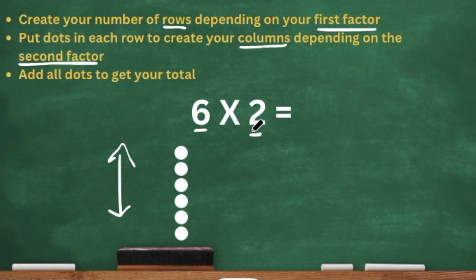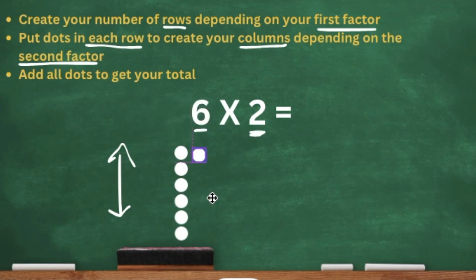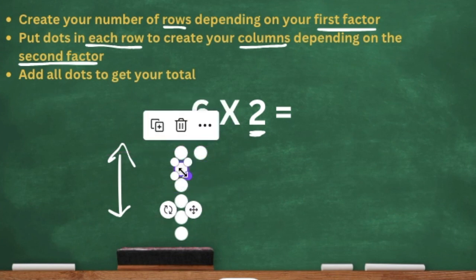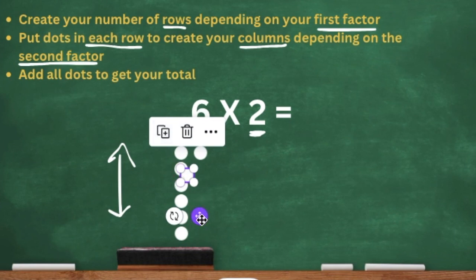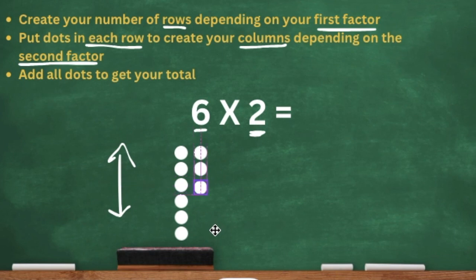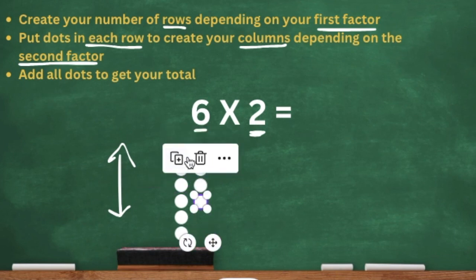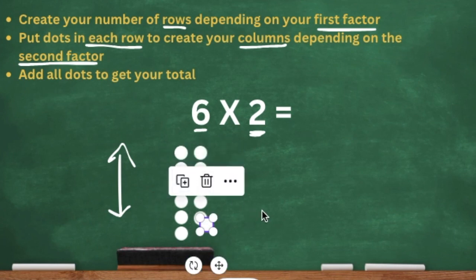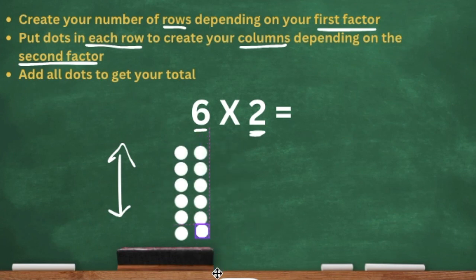I look at the second factor, which is two, and I'm going to put two dots in each row to create my columns. We already have one dot in each row, so we just add one more to make two. That's two in that row, two on the second row. Remember, each row already has a dot — you're just adding on to get the total amount depending on your second factor. As you can see, you have two dots in each row.